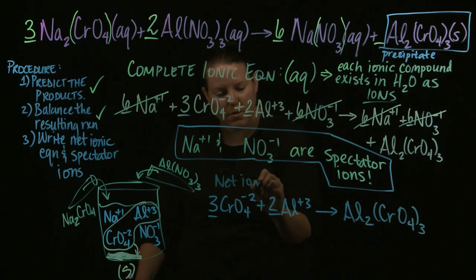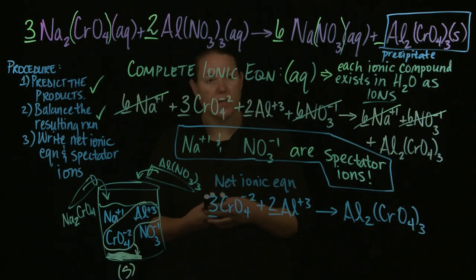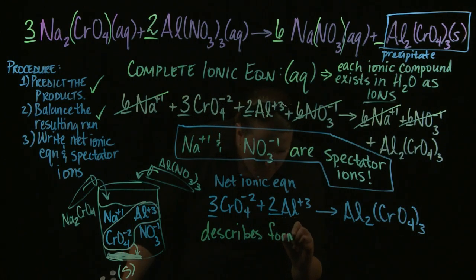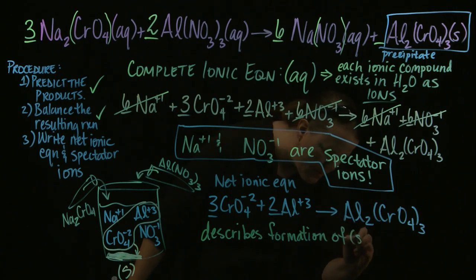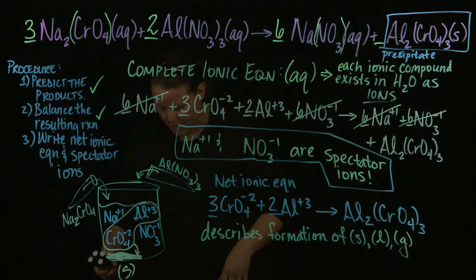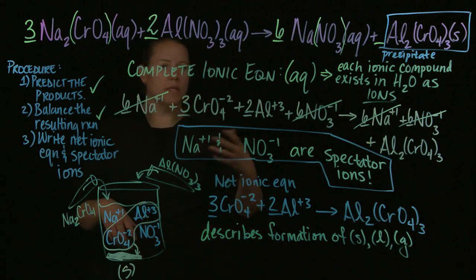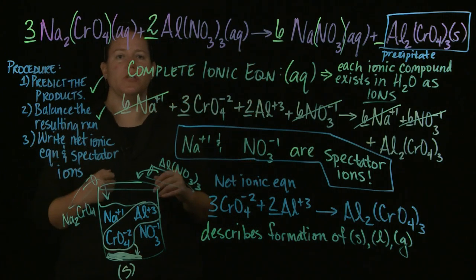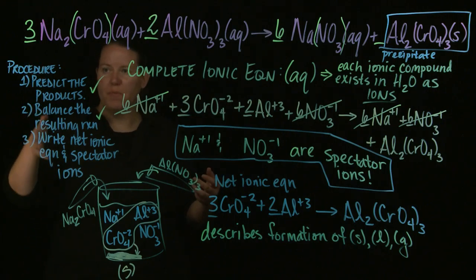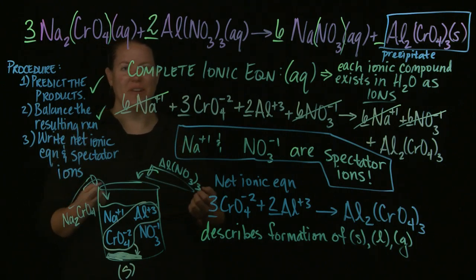The net ionic equation is important because it describes what you see in lab — the formation of a solid, liquid, or gas. That's the complete ionic equation method, which is the accepted and important way. In the next video, I'll take the same equation and show the quick way of finding the net ionic equation and spectator ions. This is everything you can do with an exchange reaction. You can go and practice, and until I see you again, I bid you adieu.